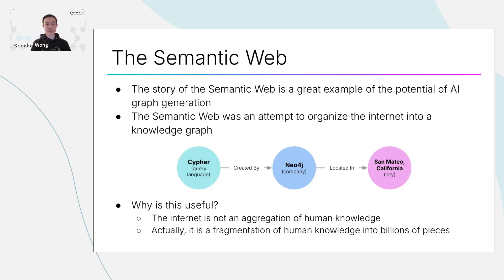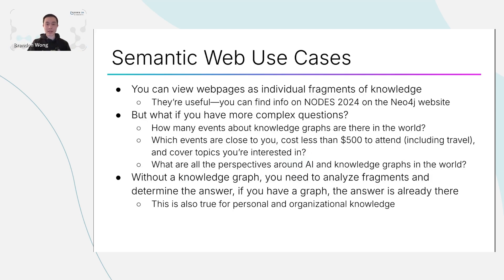So why is a global knowledge graph useful? In my view, the internet today is actually not an aggregation of human knowledge — it is a fragmentation of human knowledge into billions of pieces. Web pages are individual fragments of knowledge and they're very useful. For example, you can find information about Nodes 2024 on the Neo4j website — who is speaking, what they're speaking on, and what time.